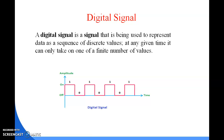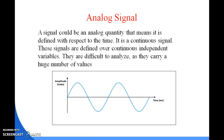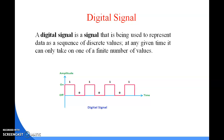A digital signal is a signal used to represent data as a sequence of discrete values. At any given time, it can only take on one of a finite number of values. The difference from analog is that analog has continuous independent variables and contains many values.